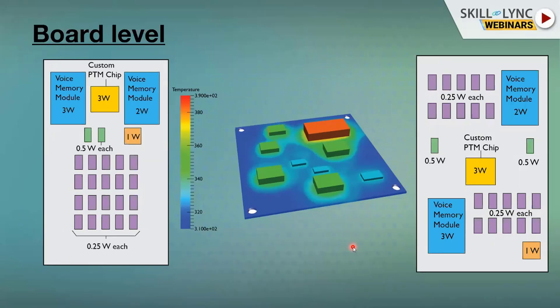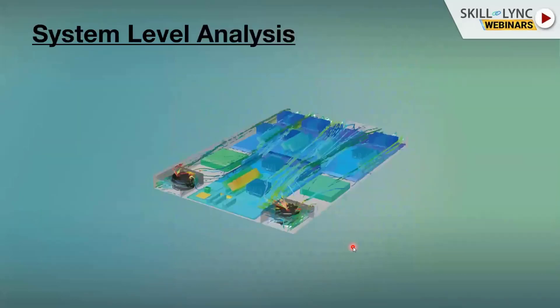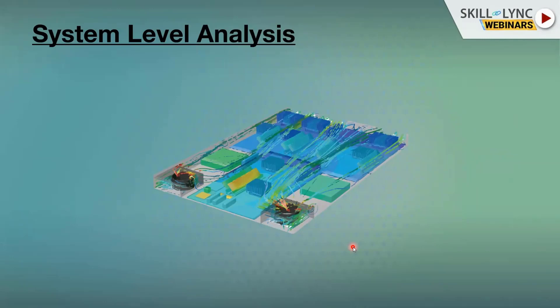When this board is placed into a system, it behaves differently because it is surrounded by other components. It may be placed in an enclosure, other daughter boards may be present, or mechanical components may interact with the board. You may also have fans, blowers, and heat sinks inside the system. So an electronic component behaves differently at PCB level, board level, and system level due to the many interactions with other components.